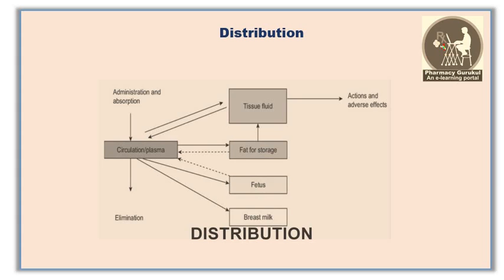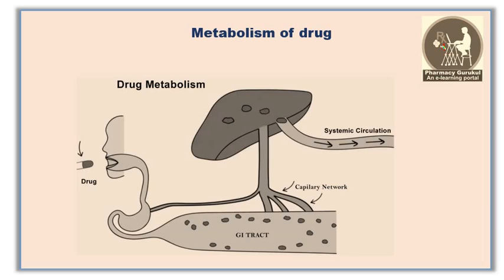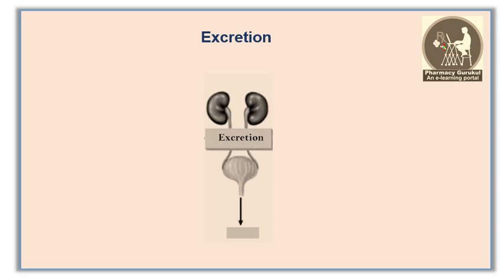The next pathway of pharmacokinetics is metabolism. Drug metabolism is the biotransformation of a drug by organs or tissues. The primary sites of drug metabolism are the liver, kidney, skin, and digestive system.